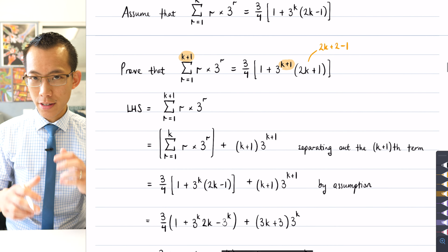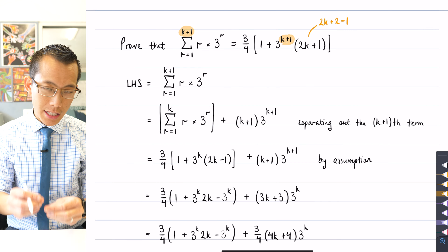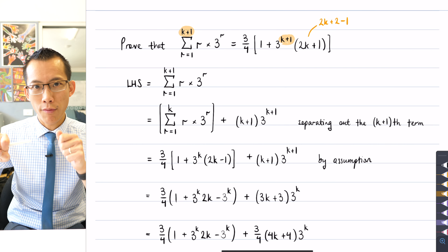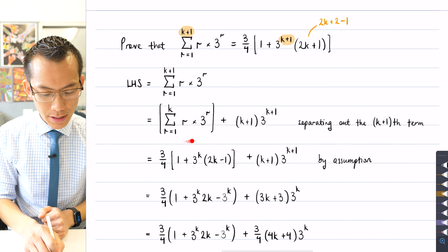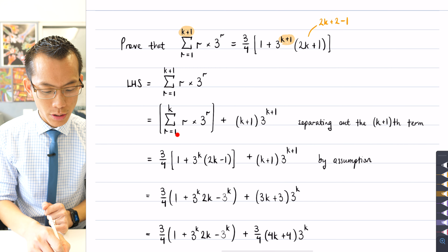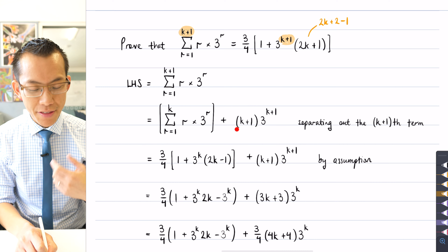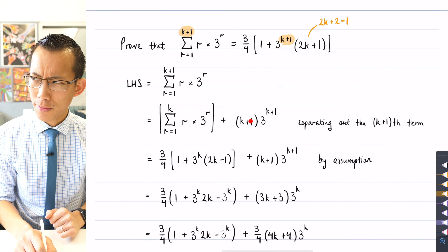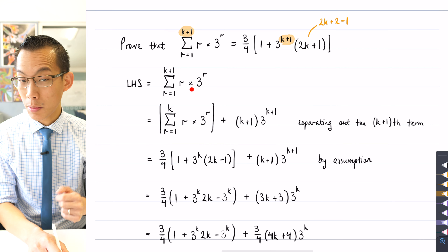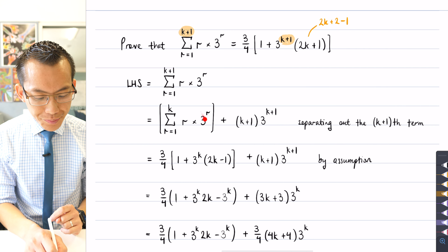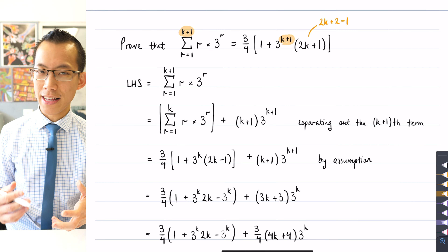The strategy here: I start with the left-hand side of my k plus 1 step. Because the left-hand side is written in sigma notation, it's easy to separate out the assumption from the part that's different. I've taken the sigma notation which goes from 1 up to k plus 1 and separated the first k terms — leaving them within sigma notation — and then separated out that final k plus 1 term.